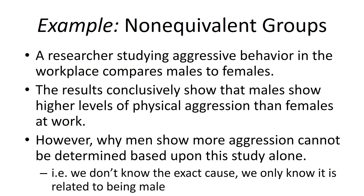Here's just one example: a researcher studying aggressive behavior in the workplace thought it would be interesting to look at differences between males and females. They went to the workplace, did a naturalistic observational type of study, separated people into groups, and collected data. The results showed conclusively that males have higher levels of physical aggression than females in the workplace. However, why exactly the men were acting this way cannot be determined — we can tell the difference, but we can't explain why or draw any conclusions about cause and effect.